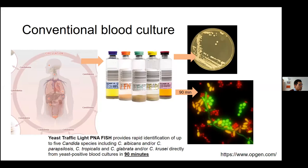Green means Candida albicans or parapsilosis. Yellow means tropicalis. Red means glabrata or krusei. They've split it into susceptible, intermediately susceptible, and resistant to the azoles. That traffic light system doesn't perfectly apply in the South African setting because our parapsilosis is azole-resistant. But it's still useful because it gives you an ID fairly quickly.